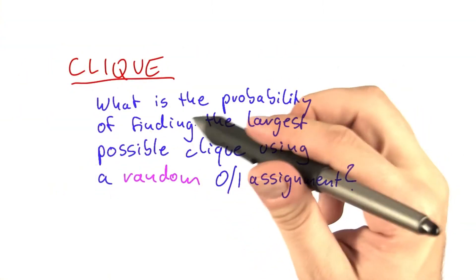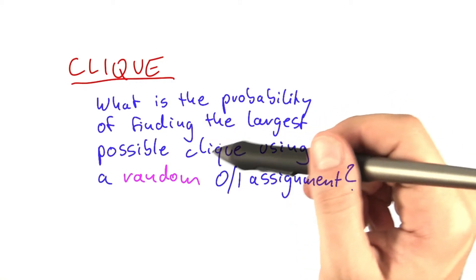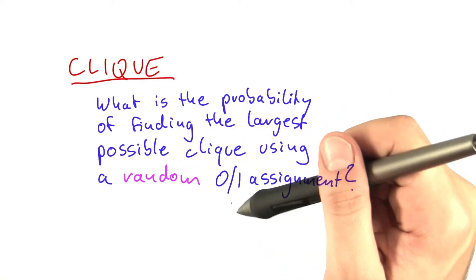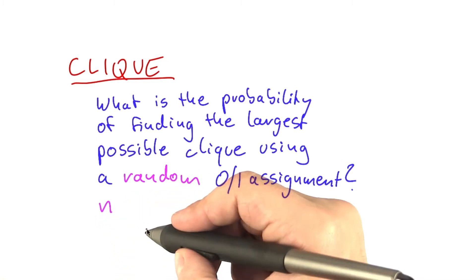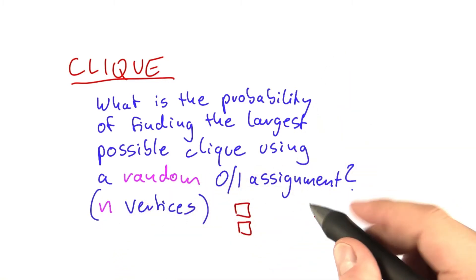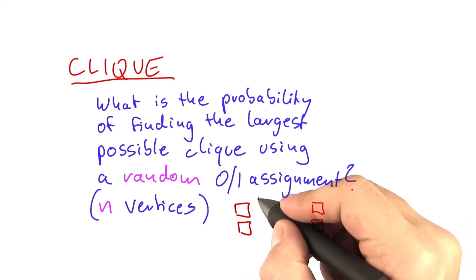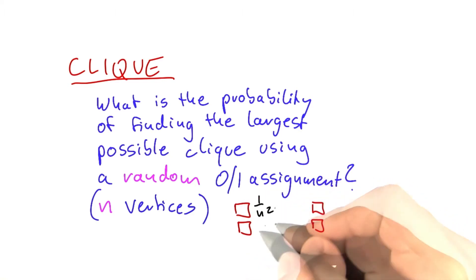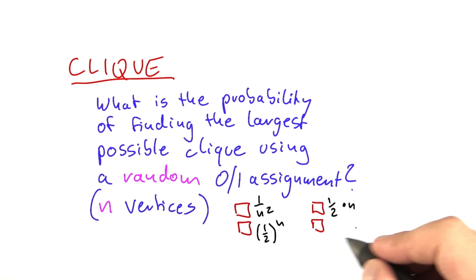Let's say you use randomness in a very naive way to solve clique and just assign all of the vertices random values of 0 and 1. Now let's say you're doing this for a graph with n vertices. Well, actually I think you can answer this question if I give you four choices from which to choose. So is it 1 over n squared? Is it 1 half to the power of n? Is it 1 half times n? Or is it 2 to the power of n over n squared?